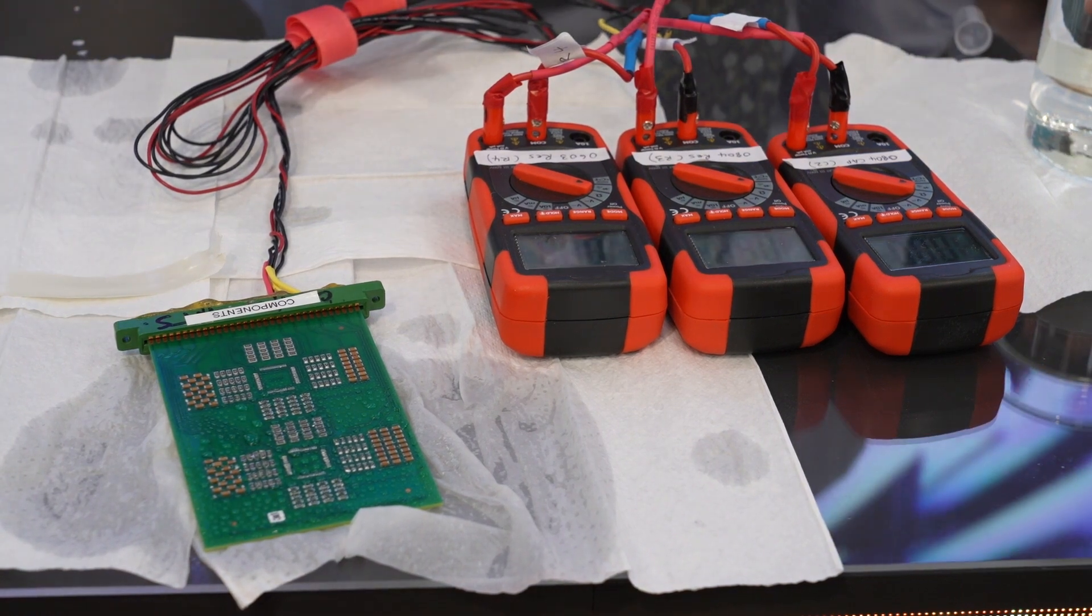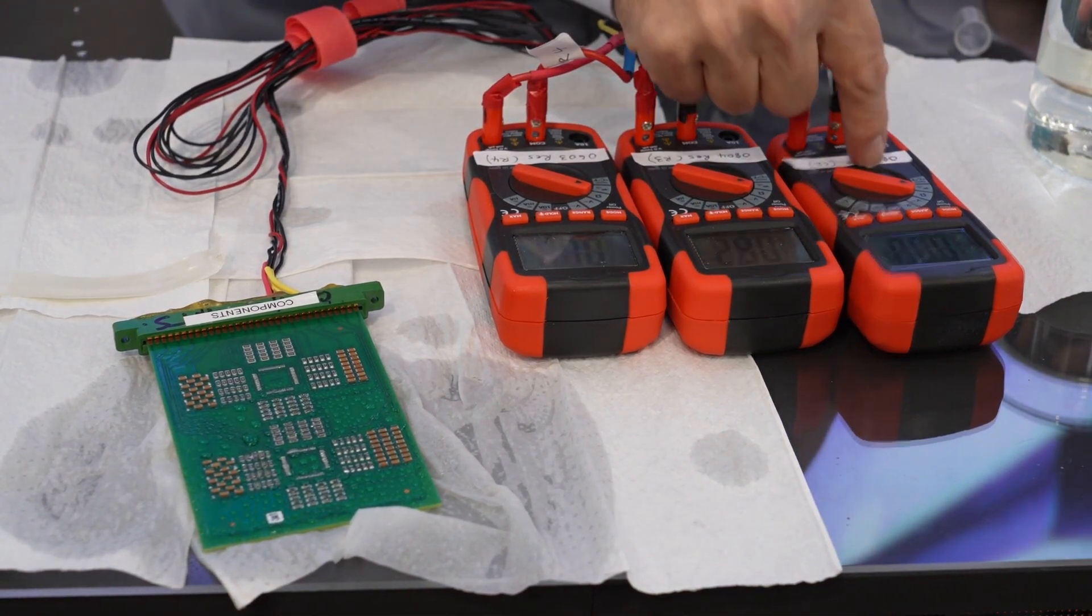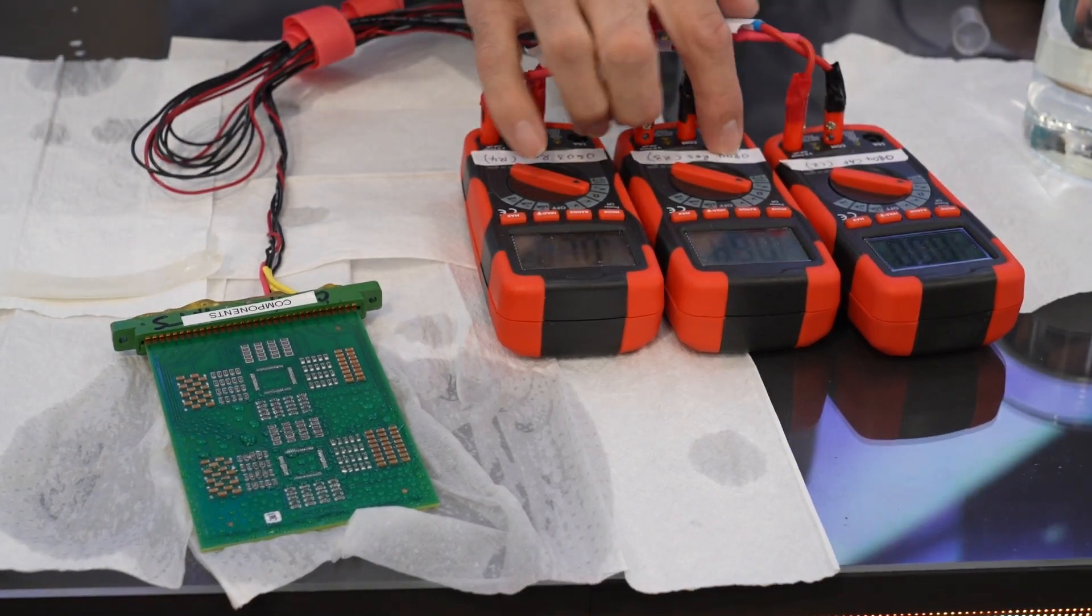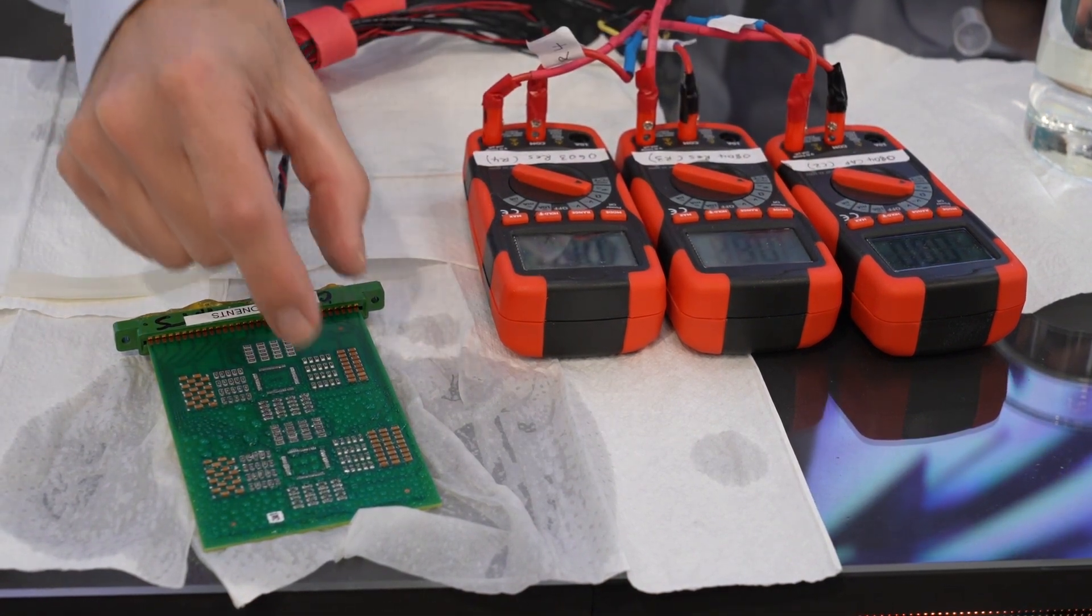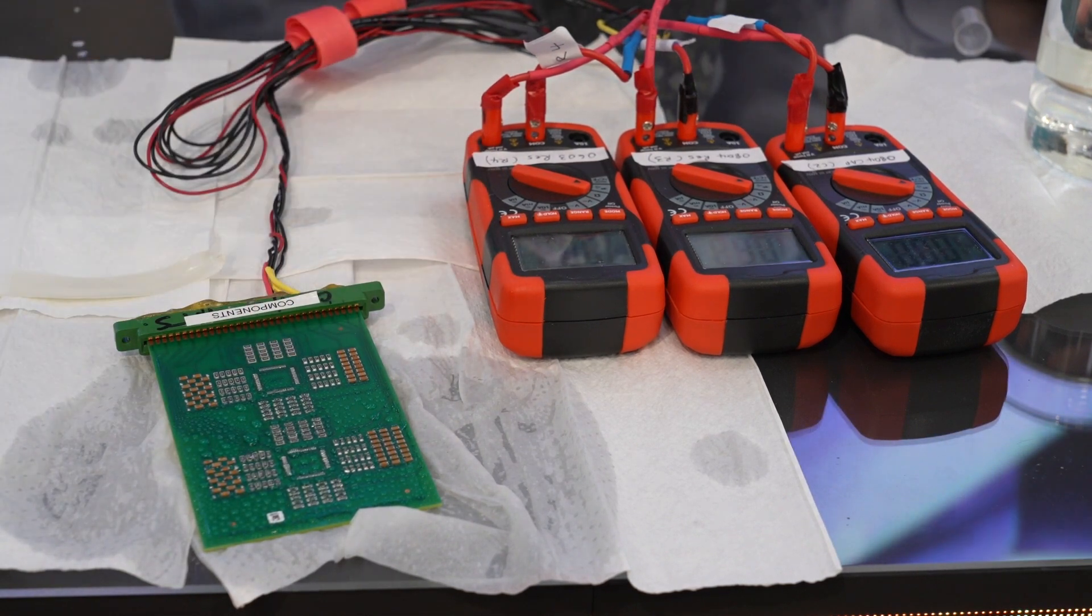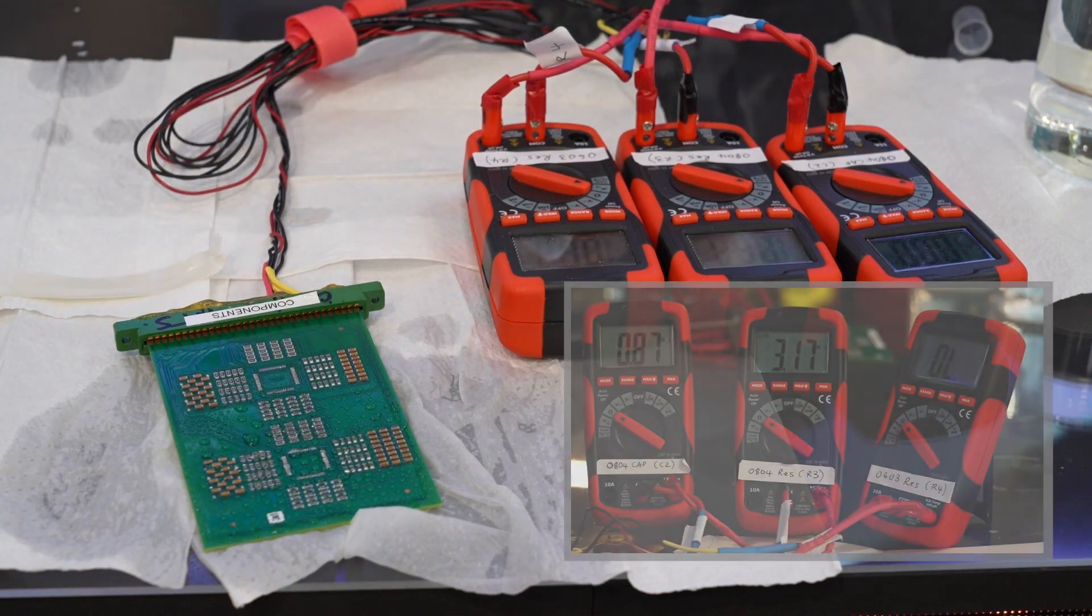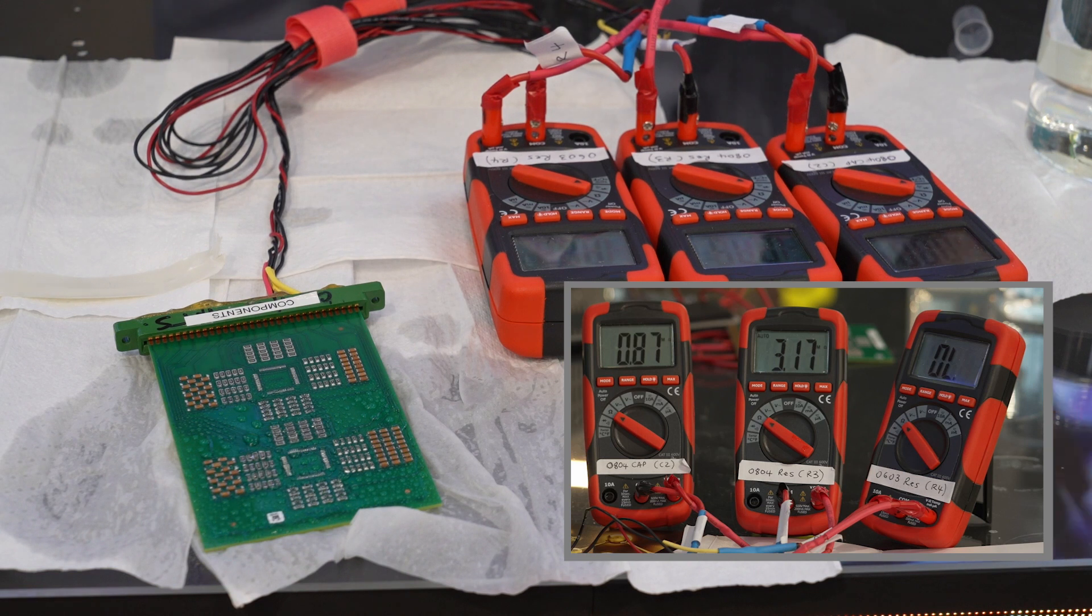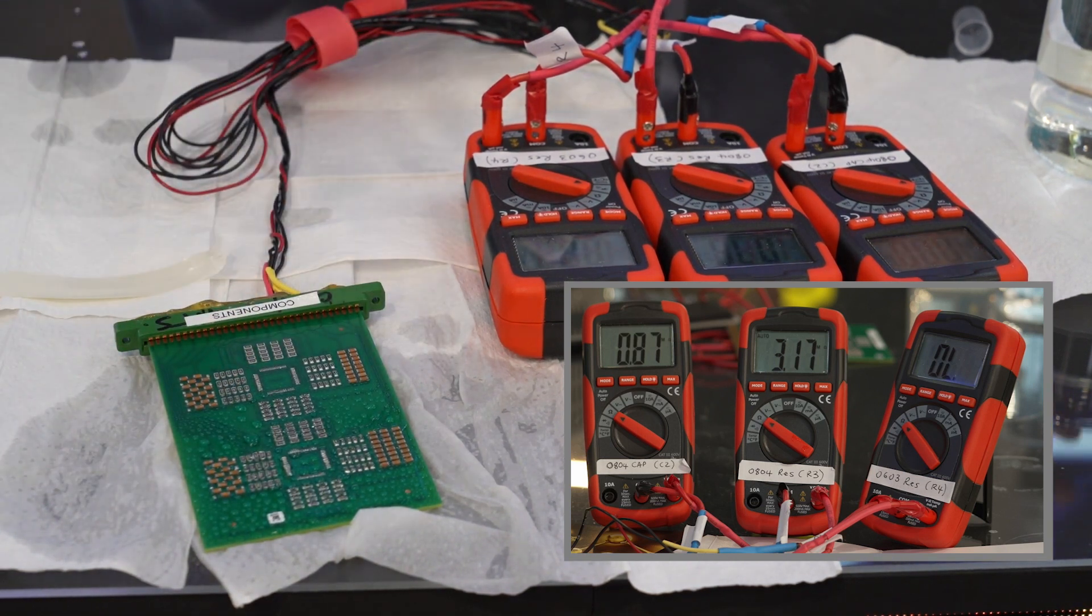Again, we see this effect that the large components, the 0804 components, the 0804 capacitors and the 0804 resistors, we are seeing no resistance between them. There is complete failure. The 0603 components, they're smaller components and they have got better protection. This is a feature that users of coatings are seeing more, that as the components get bigger, we are getting worse sharp edge coverage.